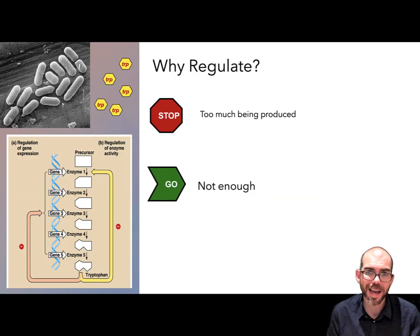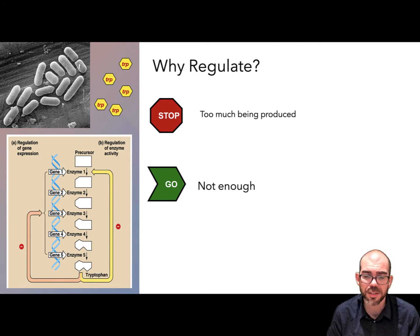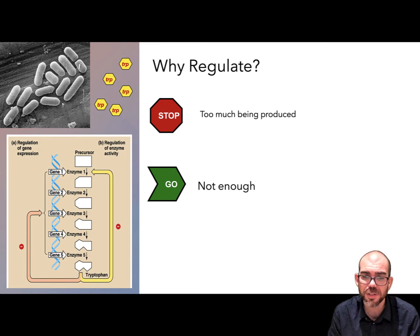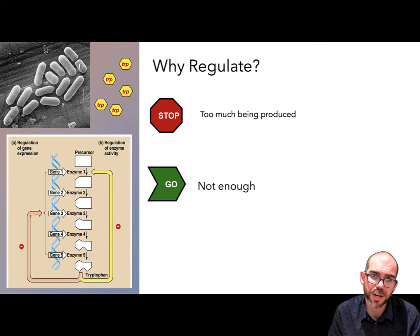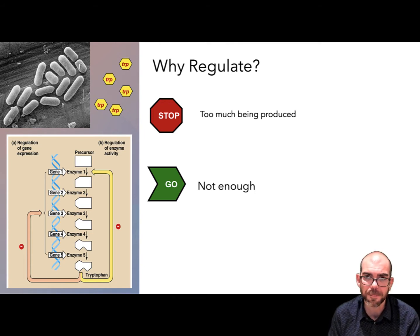So why have a regulation measure in the first place? Cells are constantly needing to maintain homeostasis. You need to have the right internal conditions and the right amount of substances being produced or digested. So this regulation provides an on-off switch — stop or go — to keep all the substances at the right numerical value they need to be.